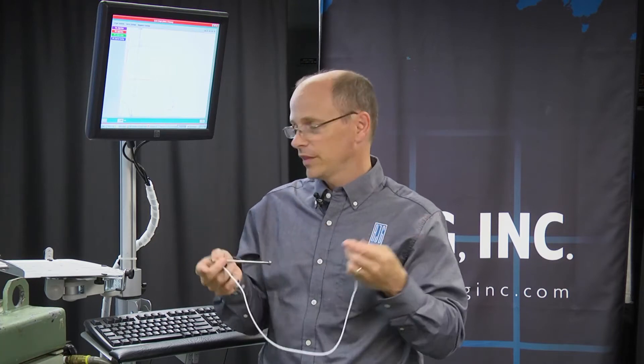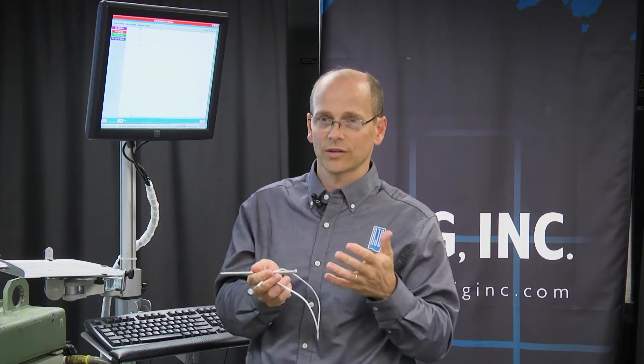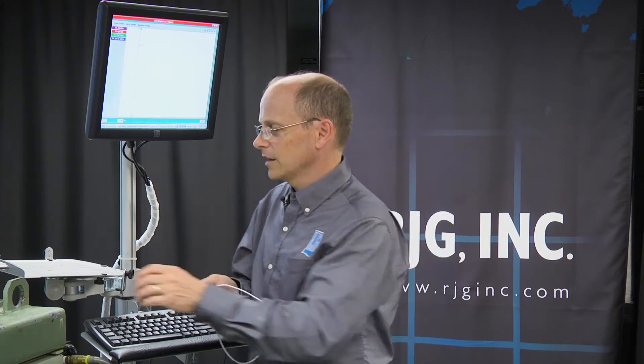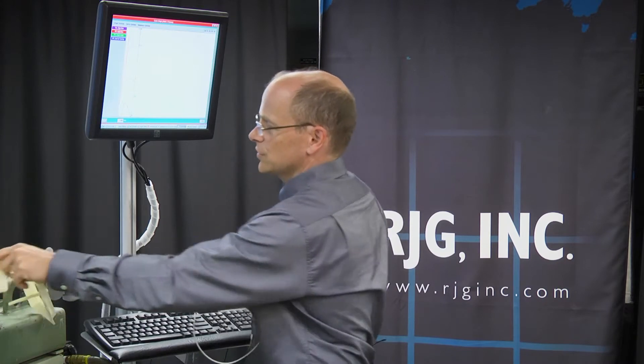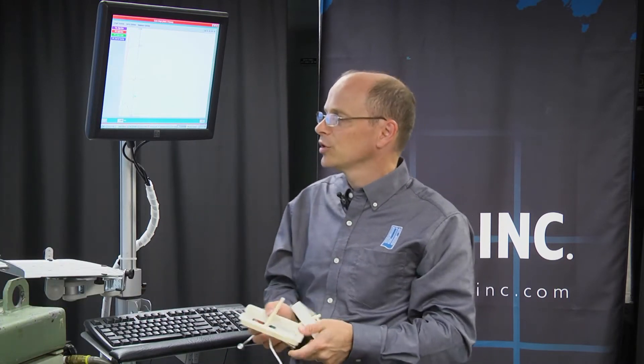That's an overview of the part we're molding and the sensors that we're using to monitor the cavity pressure inside the mold. Let's talk for a moment about the sensors that are used on the press because there's information that we want to see there.